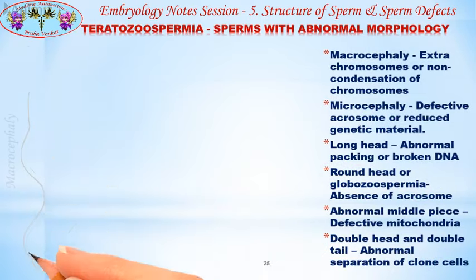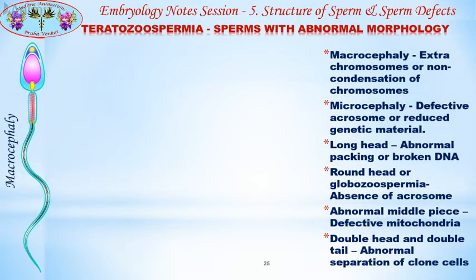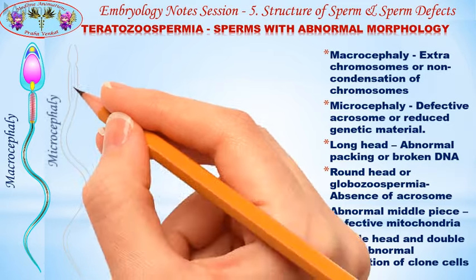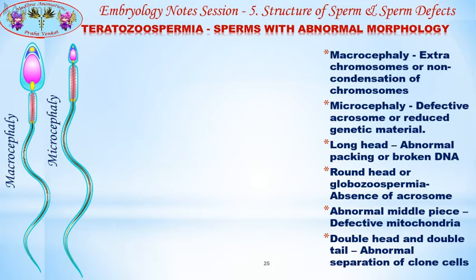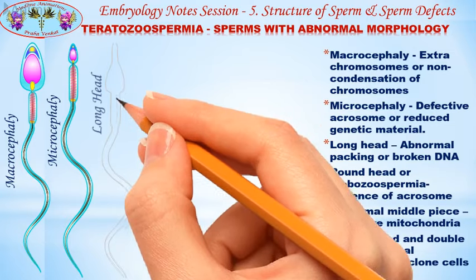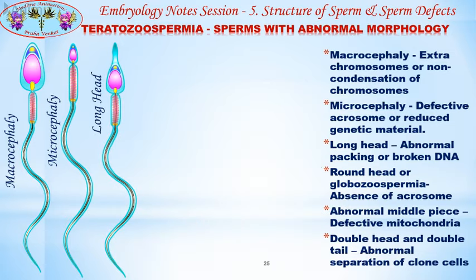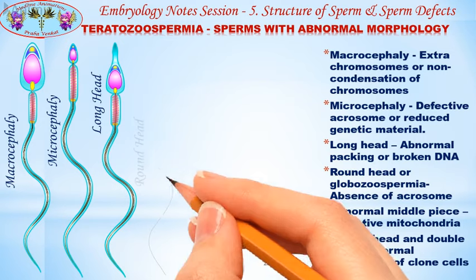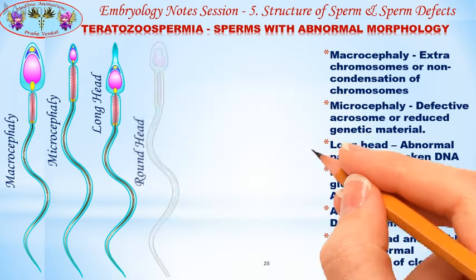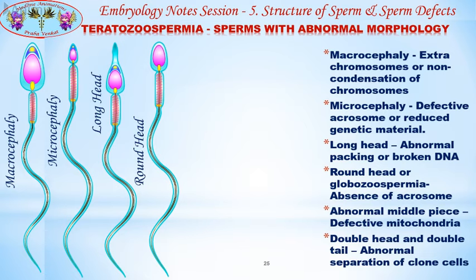The first head defect is macrocephaly, or giant head, caused by the presence of extra chromosomes or non-condensation of chromosomes. The next is microcephaly, or very small head, due to a defective acrosome or reduced genetic material. The long head is caused by abnormal packaging of DNA or broken DNA. The round head, or globozoospermia, is due to the absence of the acrosome.